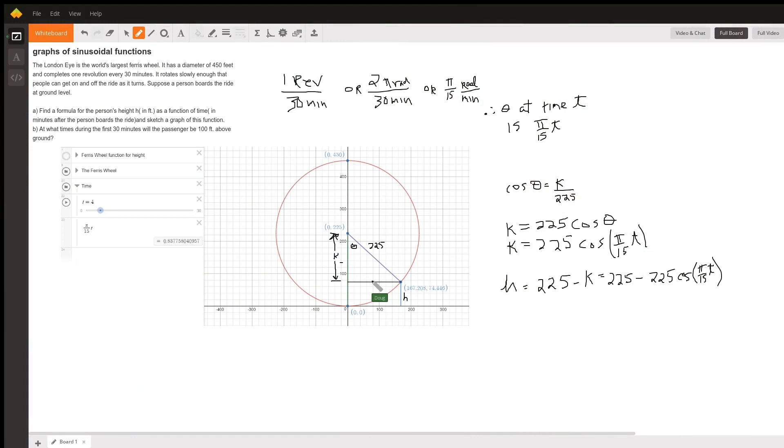Here's a graph that depicts the Ferris wheel. The Ferris wheel is in red and has a diameter of 450, so the radius is 225. We're told that the Ferris wheel revolves at one revolution every 30 minutes.